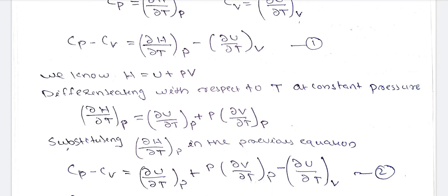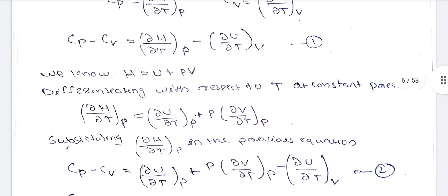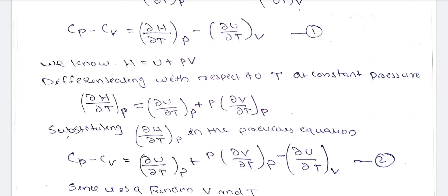Starting from H equals U plus PV, we differentiate with respect to temperature at constant pressure. So dH/dT at constant pressure equals dU/dT at constant pressure plus P times dV/dT at constant pressure.